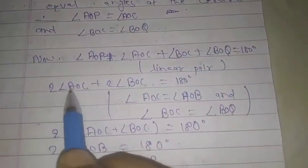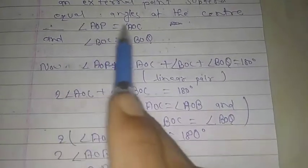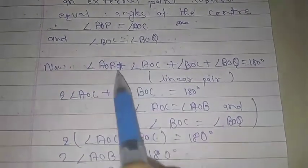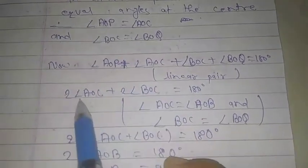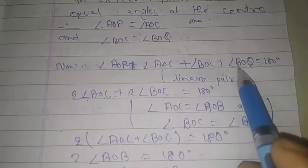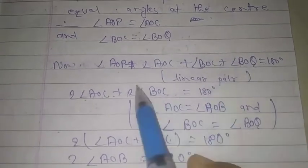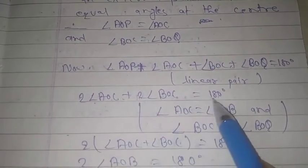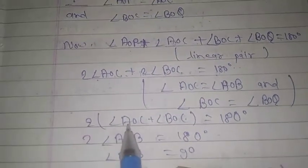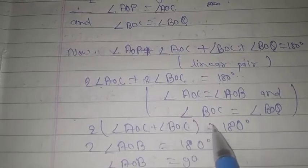So, 2 angle AOC. We use AOC in place of AOB because those are equal. So 2 angle AOB plus 2 angle BOQ equals 180 degrees. 2 angle AOB plus angle BOC equals 180 degrees.